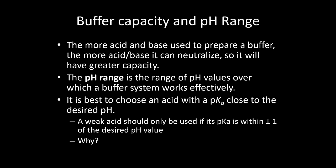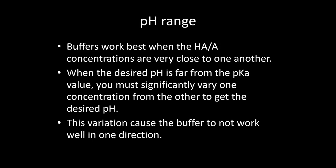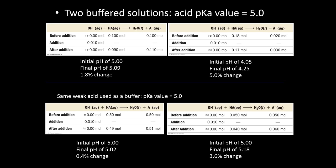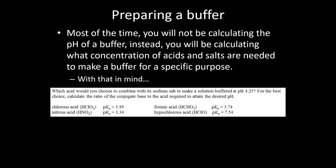For buffer capacity and range, all I expect you to know is that you want your target pH to be within one unit of the pKa of your acid, and that higher buffer concentration means higher buffer capacity — more ability to resist pH change. You might need to pick the best acid to use for a given buffer, but I don't think I combined that with a calculation in the same question.